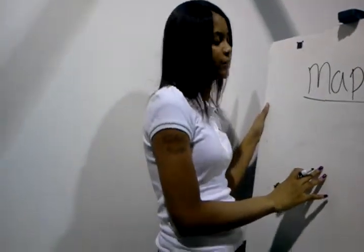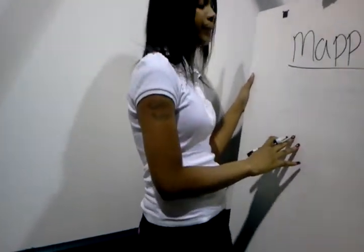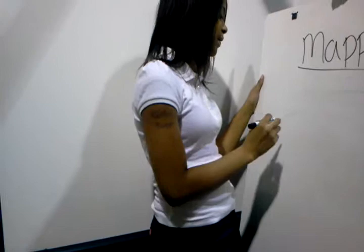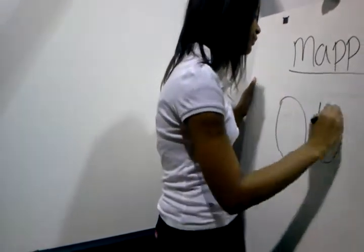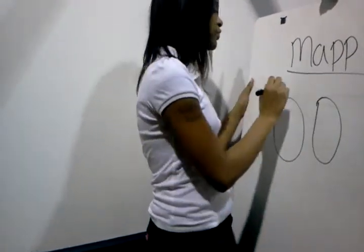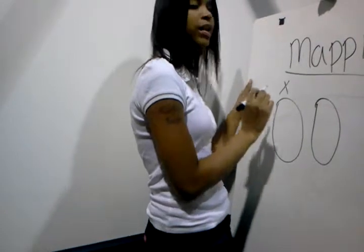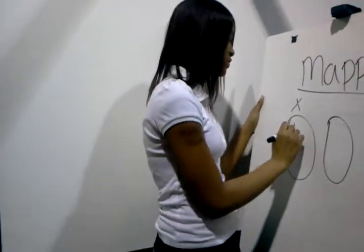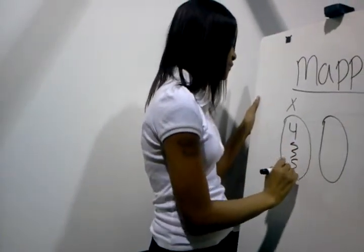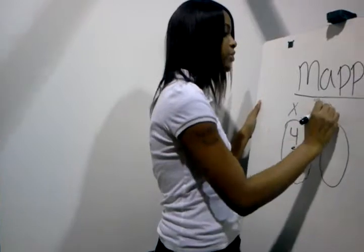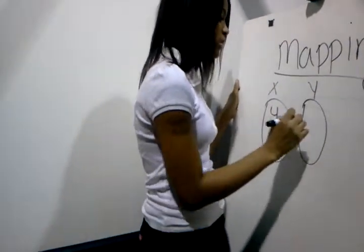In a linear equation, one way is mapping. In order to do mapping, you draw two circles. Then you put your X's, which is your domain, on the left side because they always go first. Then you put your Y's, which is the range, on the right side because they always go second.